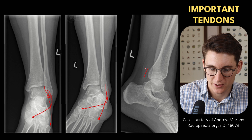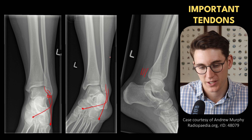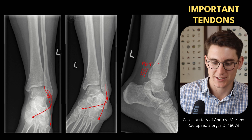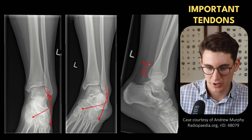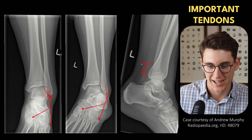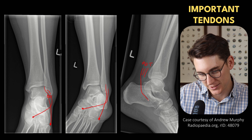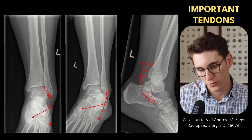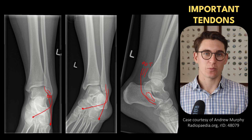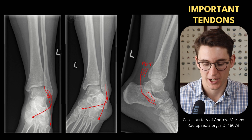Medially, we have three tendons passing behind our medial malleolus, which we're going to look at very closely on our MRI. There's a common mnemonic — Tom, Dick and Harry — to remember these three tendons: tibialis posterior, flexor digitorum longus, and flexor hallucis longus. The flexor hallucis longus runs underneath the sustentaculum tali before heading out towards the great toe. These are the major ones I want you to understand their pathway prior to the MRI talk.